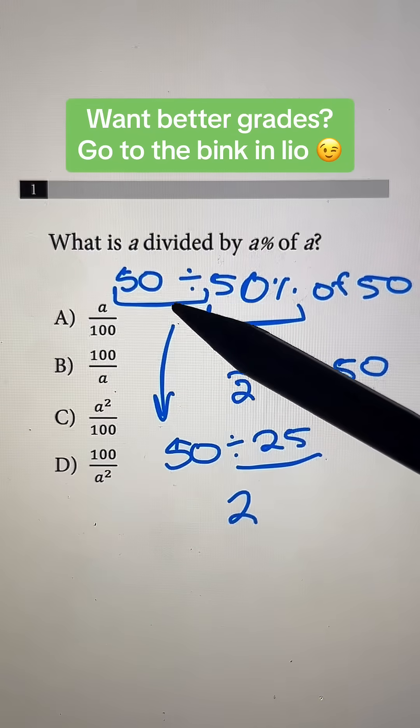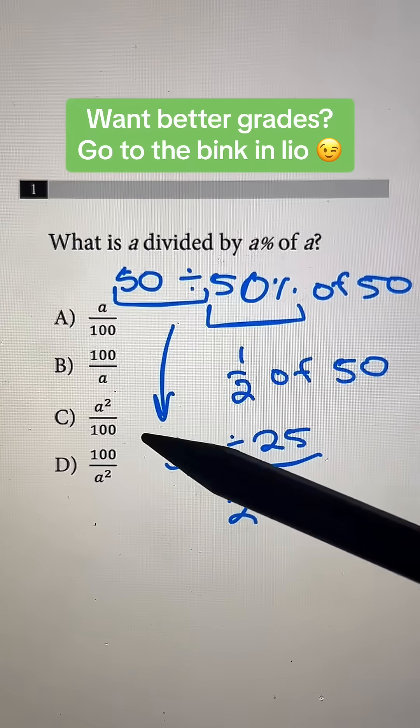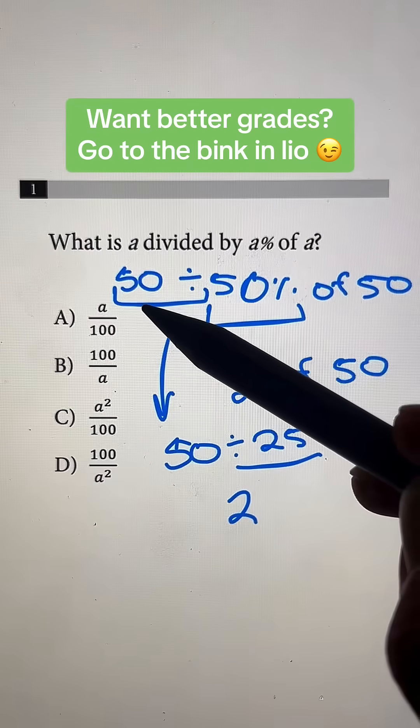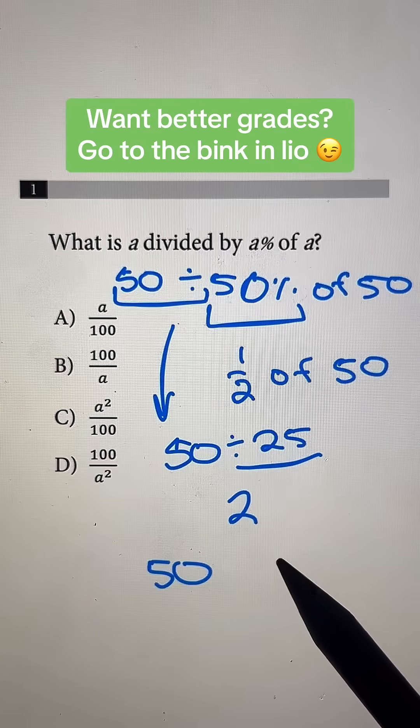Now 2 is none of these choices because it has to be in relation to A. And our A value is going to be 50. So what can we do to 50 in order to get it to 2?